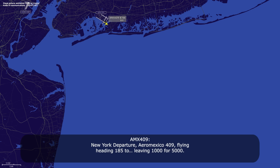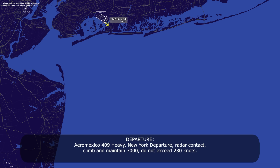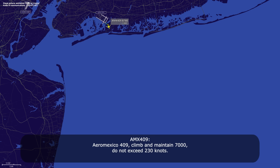Area departure, Mexico 409, flying heading 185, leaving 1000 for 5000. Mexico 409 heavy, radar contact, climb and maintain 7000, do not exceed 230 knots. Area Mexico 409, climb and maintain 7000, do not exceed 230 knots.